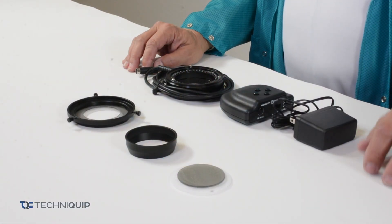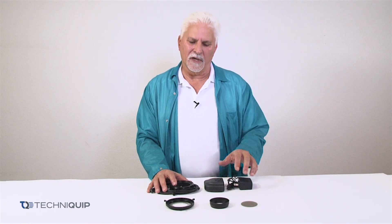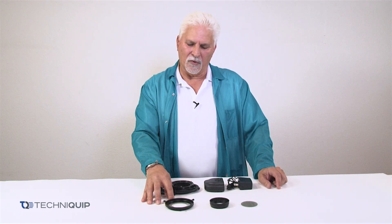In addition to the standard ring light that you will have, if you order the polarizer kit you will get these additional components. This is a rotating circular polarizer.